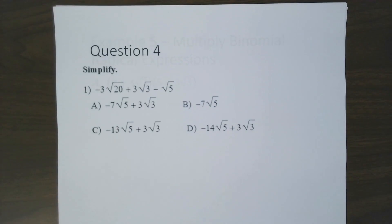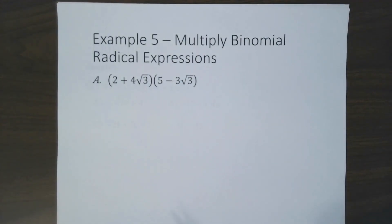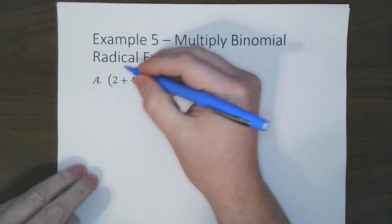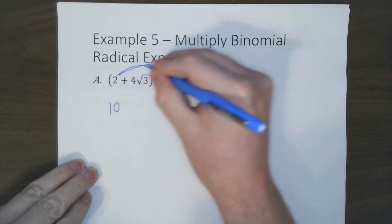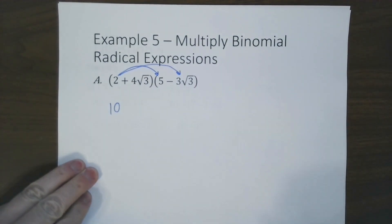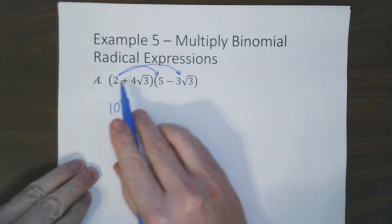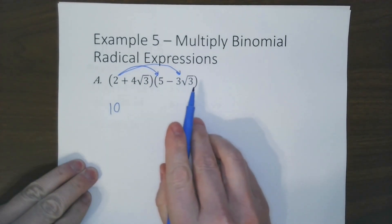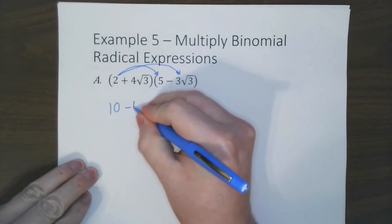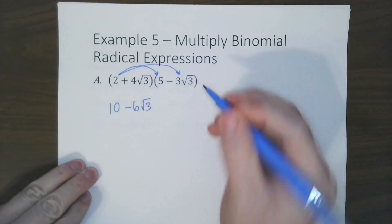Try this problem. Now we're going to multiply binomial radical expressions. So all we have to do is distribute everything, or FOIL if you will. So we go 2 times 5 is 10, 2 times negative 3 radical 3. Now, since 2 is a whole number, we're going to multiply by the number on the outside, not the radical. So 2 times negative 3 is negative 6 radical 3.